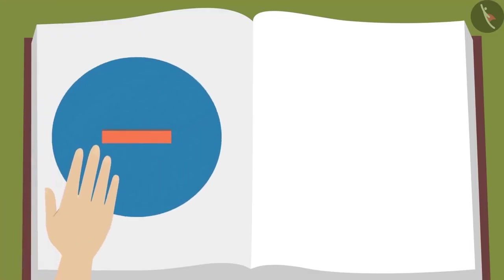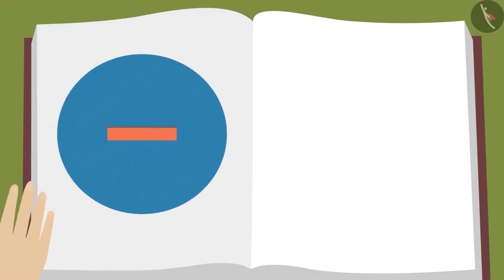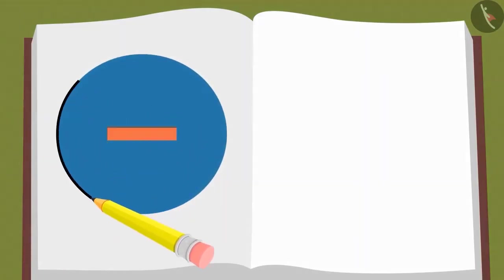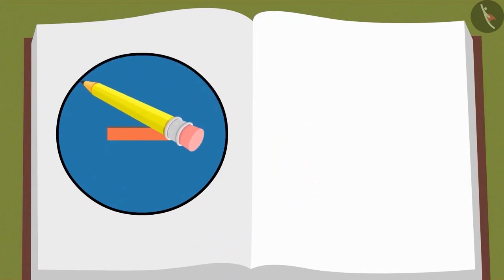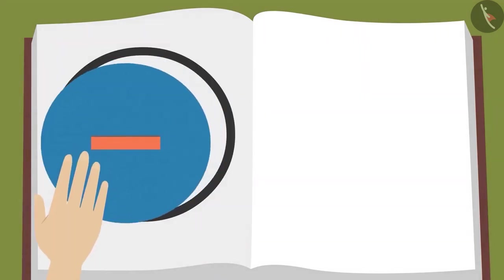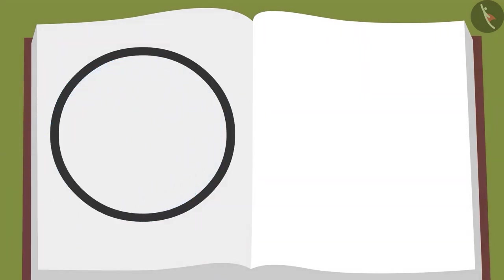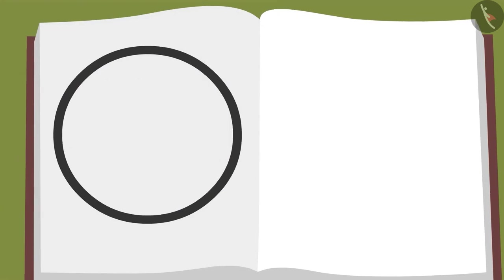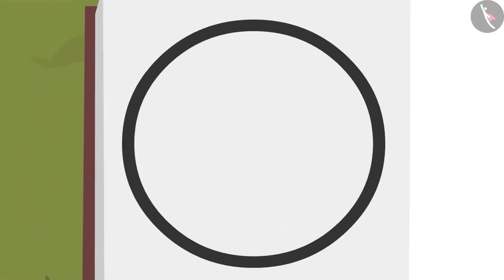Now I will keep this on a paper and trace its boundary with a pencil. Now let us lift the tiffin box. Look, a round figure is created.